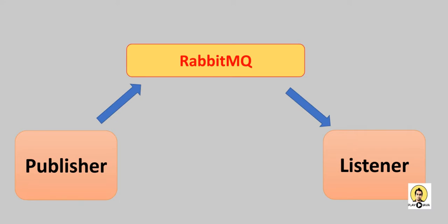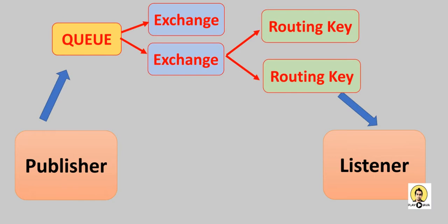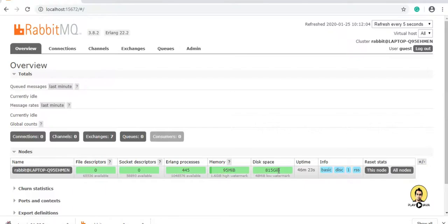RabbitMQ is nothing but a pipeline, or you can see it as a queue. It has two layers of classification. The first level is the exchange and the other one is the routing key. We can track whatever data is inside the queue — for which exchange and through which routing key. So tracking becomes easy, and whenever data is sent to the queue through a particular exchange or routing key, it is tracked in the queue and finally goes to the listener.